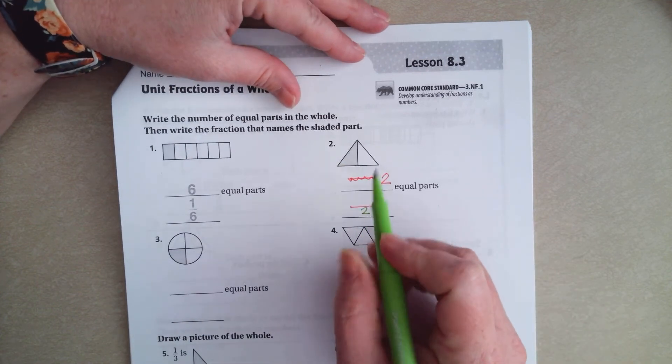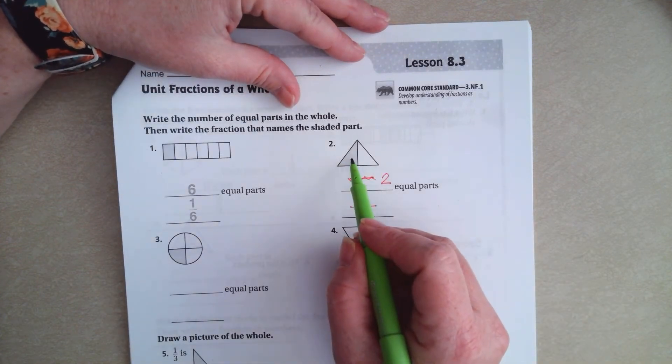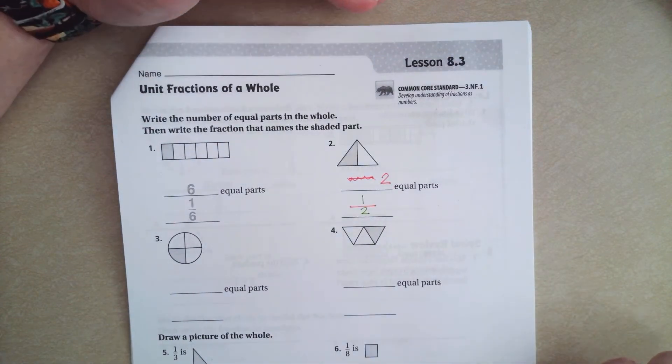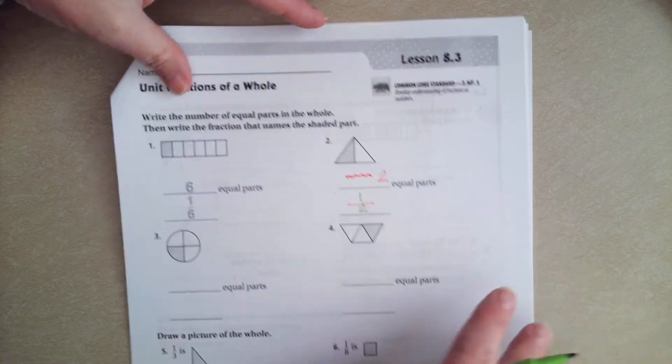Now, the top number, the numerator, is going to be how many parts are colored in. In this case, it's just one. So it's half. Which, if you look at it, you know that half of that triangle is colored in.